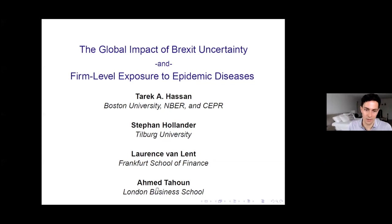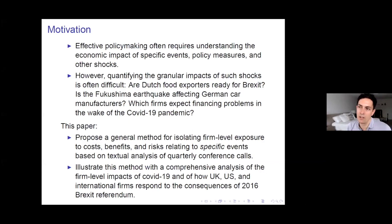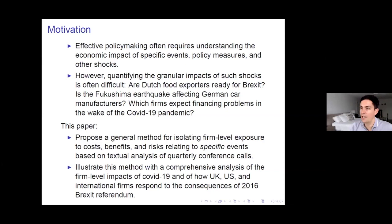This is joint work with Stefan Lawrence and Ahmed. Effective policymaking often requires understanding the economic impact of specific events, policy measures, and other shocks. A great example is understanding firm-level impacts of coronavirus if we want to know how to help firms get through this period. However, quantifying the granular impacts of such shocks is often difficult. The Dutch government might want to know if Dutch food exporters are ready for Brexit, or the German government might wonder whether the Fukushima earthquake is affecting German car manufacturers. We're going to propose a general methodology for isolating firm-level exposures to the costs, benefits, and risks relating to specific events.